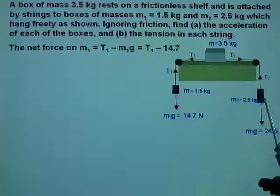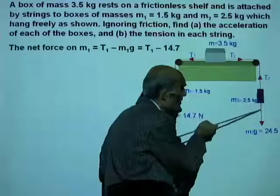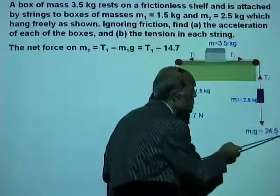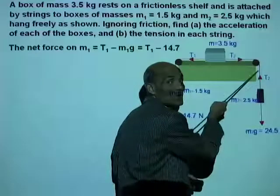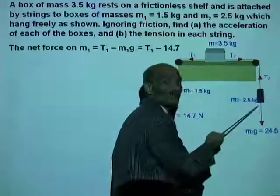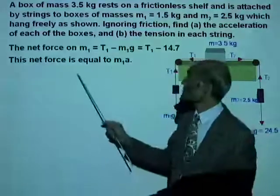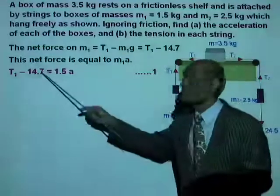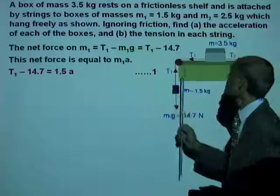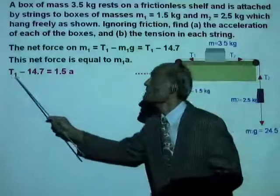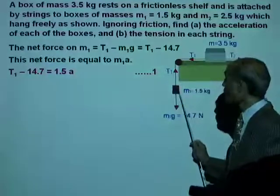So T1 minus 14.7 is the net force on M1. What is the net force on M2? M2, the weight of M2 will be M2G which is 2.5 kg times 9.8, that is 24.5 newton. That is the weight pulling it down, and the tension T2 is pulling it up. Before we do that, let's write down the equation for M1. The net force on M1, T1 minus 14.7, equal to M1A. So T1 minus 14.7 equal to 1.5A. That is the equation for the mass M1.